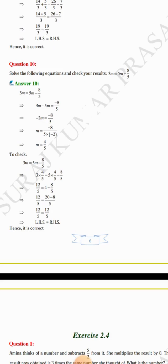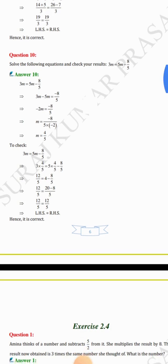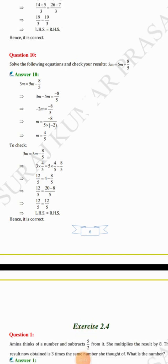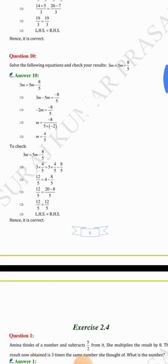To check, substitute m equals 4/5: 3 × (4/5) = 5 × (4/5) − 8/5 gives 12/5 = 4 − 8/5. Converting: 12/5 = (20 − 8)/5 = 12/5. LHS equals RHS, hence it is proved.